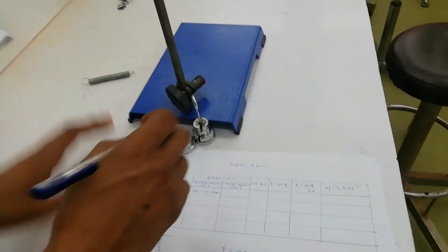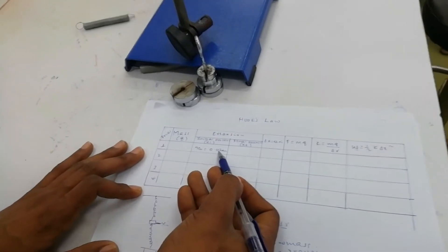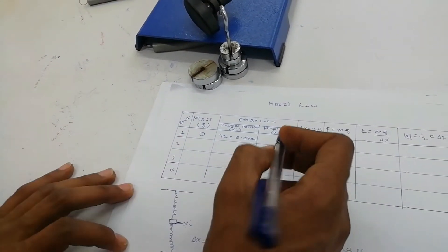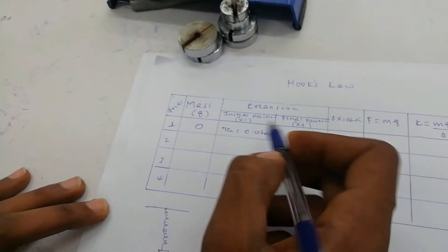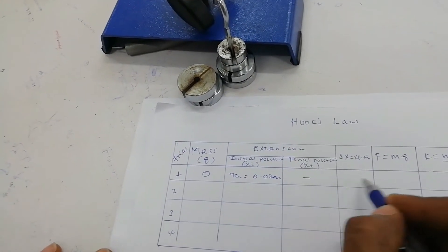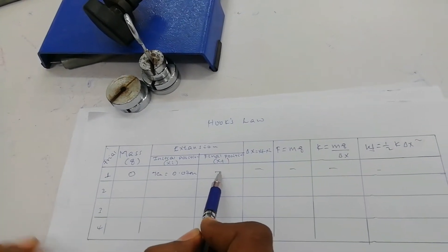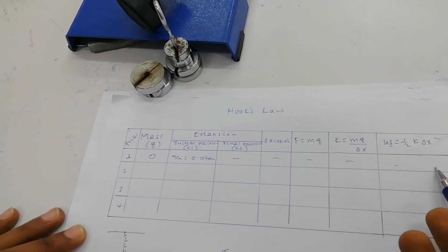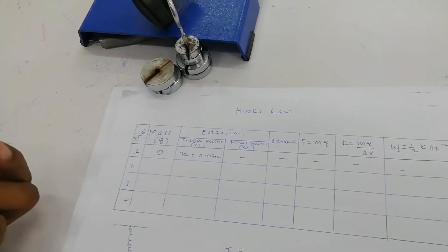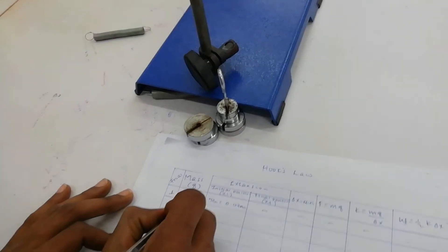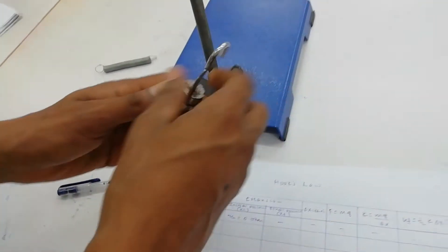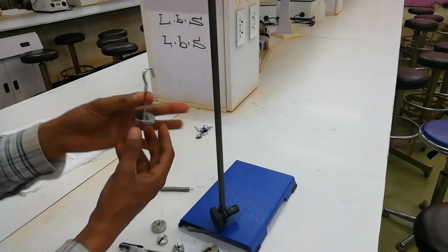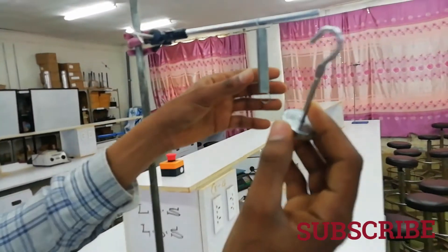We take our initial position as 7 centimeters — 0.07 meters. When measuring this initial position, we are not adding any masses, so the mass is 0 here. Because we are not adding any masses, the spring is not stretched. If you are not adding masses, the spring stays in equilibrium position, so we cannot calculate anything yet. The first step is to add 50 grams on the spring. This is 50 grams — let us add 50 grams.